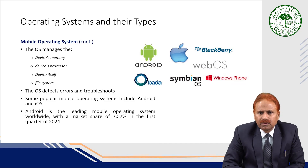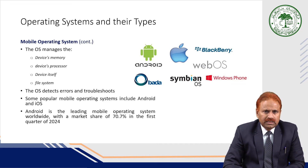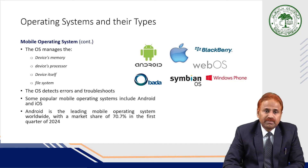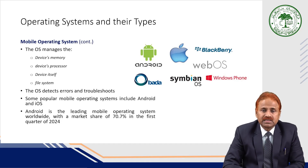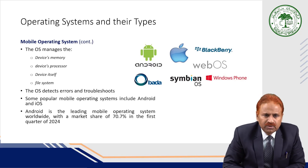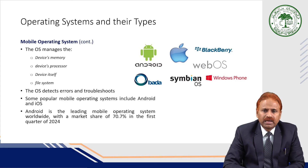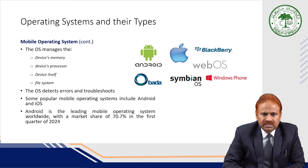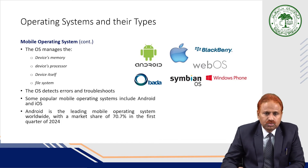Examples of mobile operating systems include Android, Symbian, Windows Phone, BlackBerry OS, and iOS. The mobile operating system helps manage the device processor, the device itself, and the file system. It also detects errors and helps with troubleshooting. Android is the leading mobile operating system worldwide, with a market share of around 70% as of the first quarter of 2024.